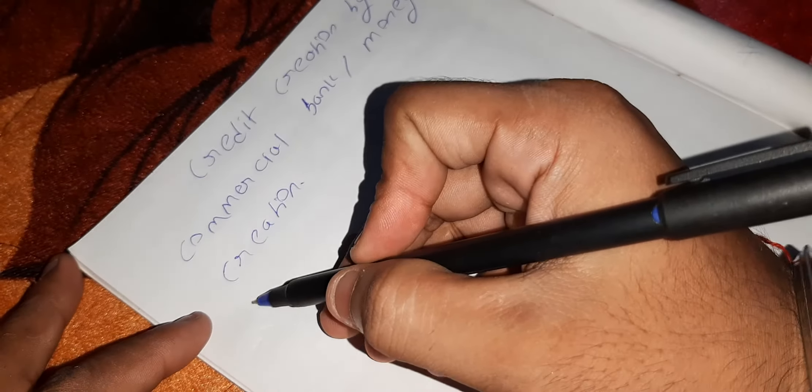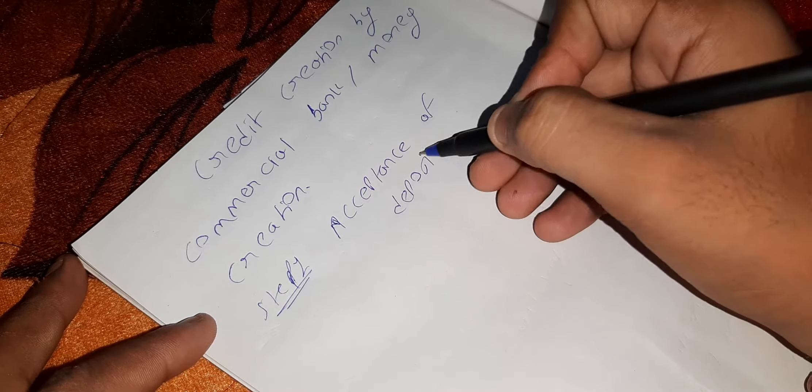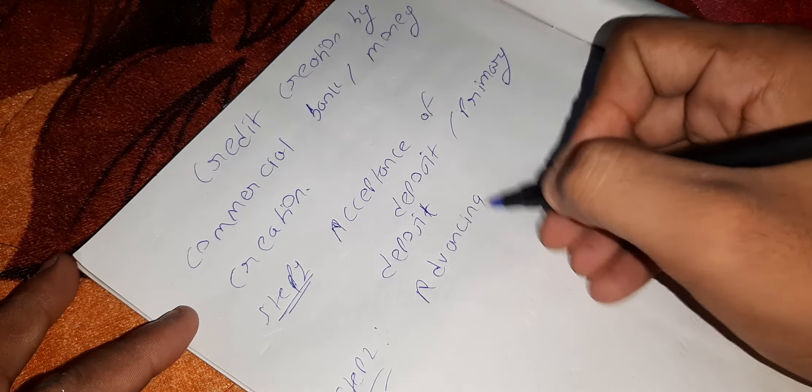There are two steps. Step number one is acceptance of deposit — also called primary deposit. Step number two is advancing of loan, where the bank advances money as a loan to needy borrowers. So the two primary functions of commercial bank are: acceptance of deposit and advancing of loan.